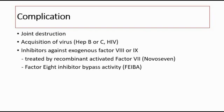Inhibitors can develop at any age, but usually after 10–20 exposure days, and are usually suspected when there is lack of response to replacement therapy despite giving high doses. To treat these inhibitors, we can give recombinant activated factor VII, also known as NovoSeven, and another alternative is factor VIII inhibitor bypass activity.